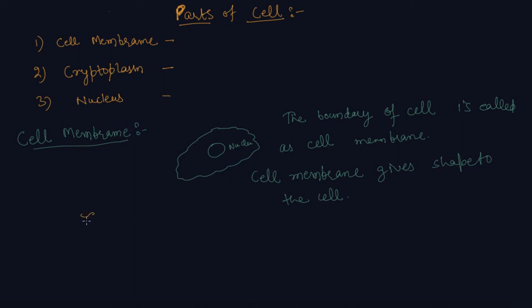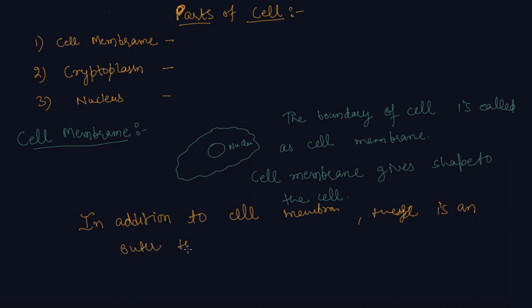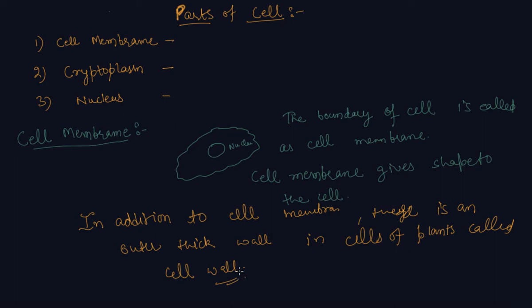In addition to the cell membrane, there is one more outer thick wall in cells of plants, called the cell wall. This additional layer surrounds the cell membrane, and the cell wall is required by plants for protection.